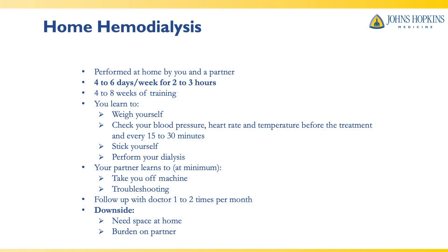Home hemodialysis uses the same type of dialysis access as in-center, just a different machine. This treatment is performed at home by you and a partner. Sessions happen about four to six days a week, and each session is about two to three hours. Training typically takes about four to eight weeks, and no one will release the machine to you before you're ready. During training you'll learn how to weigh yourself, check your blood pressure and heart rate, access your hemodialysis catheter or fistula, draw your labs, and set up and take down the machine. Your partner will learn emergency techniques and is required to be present during treatments. You will still come to the clinic to follow up with the dialysis nurse and doctor about one to two times a month.